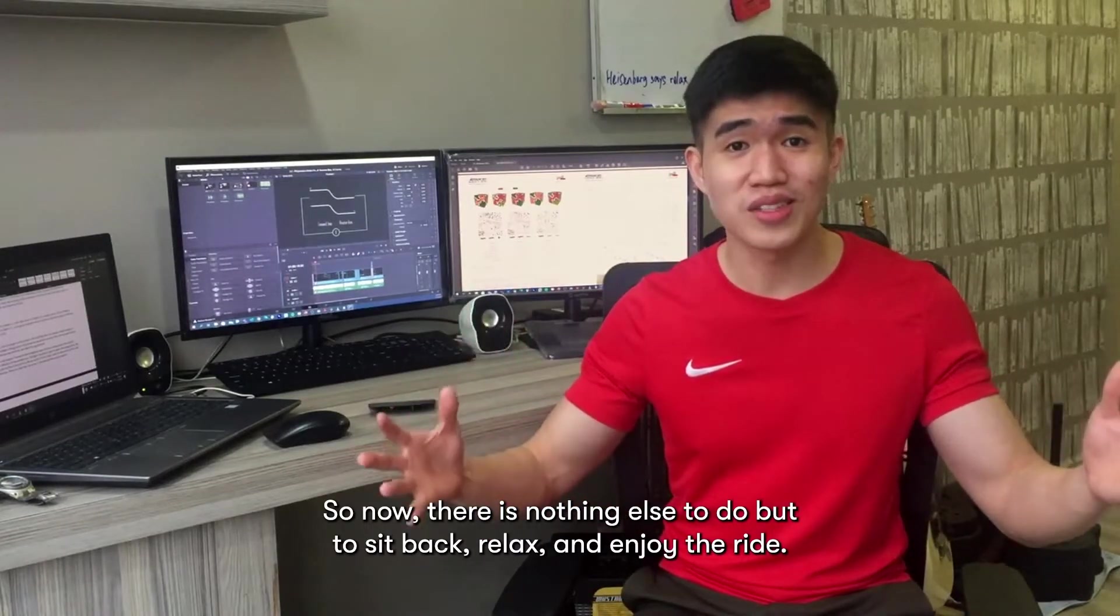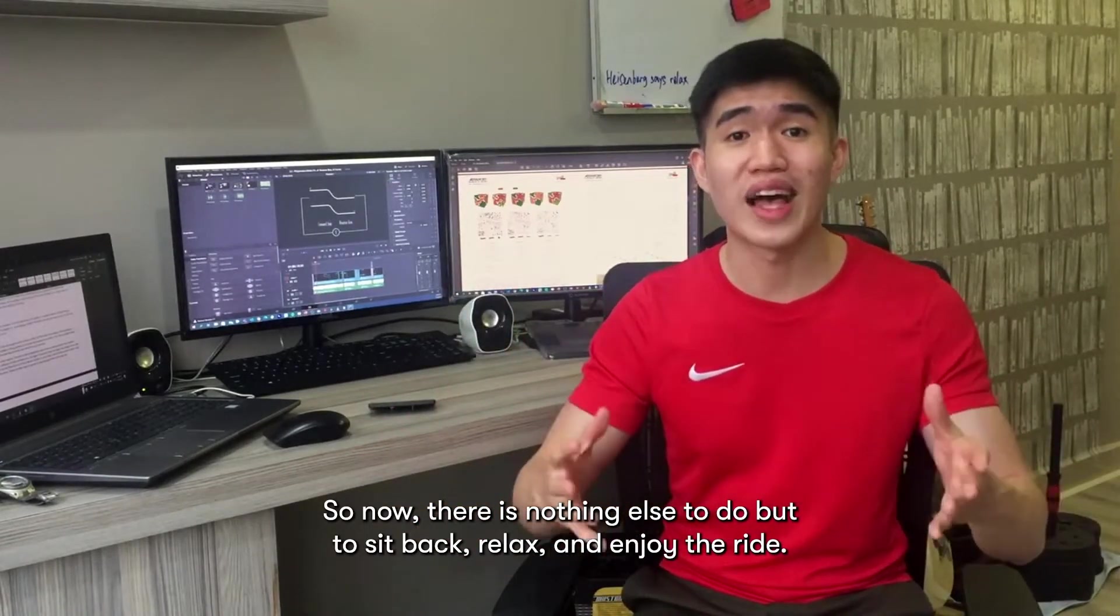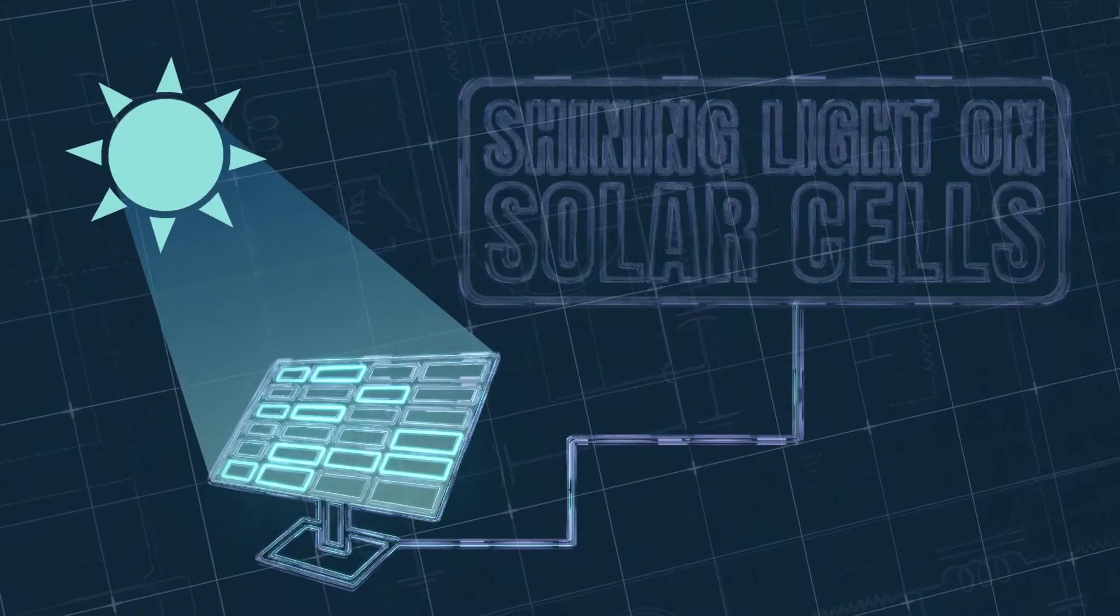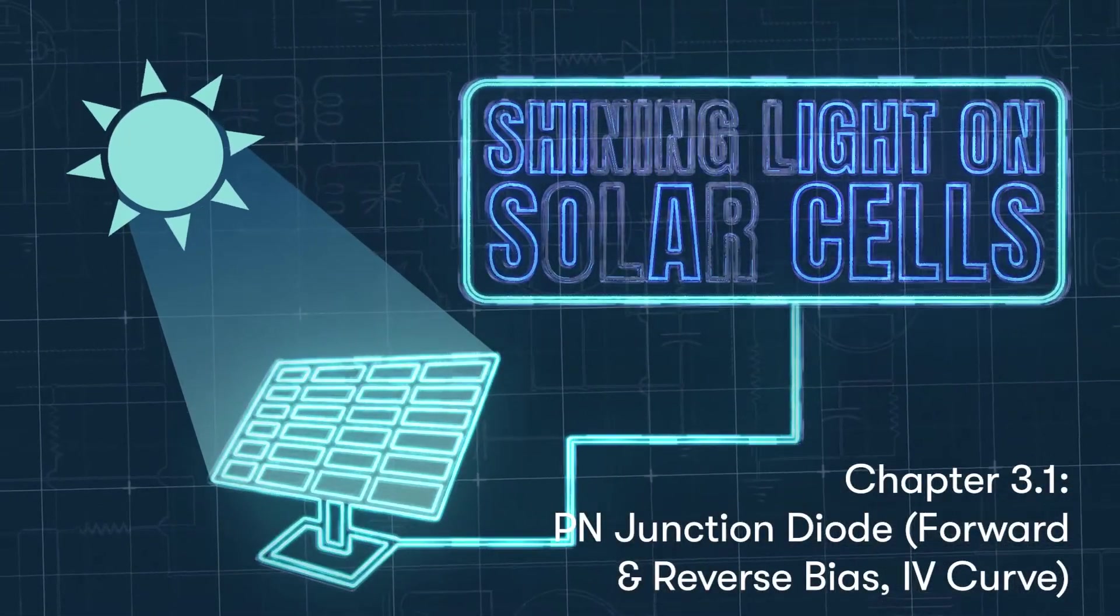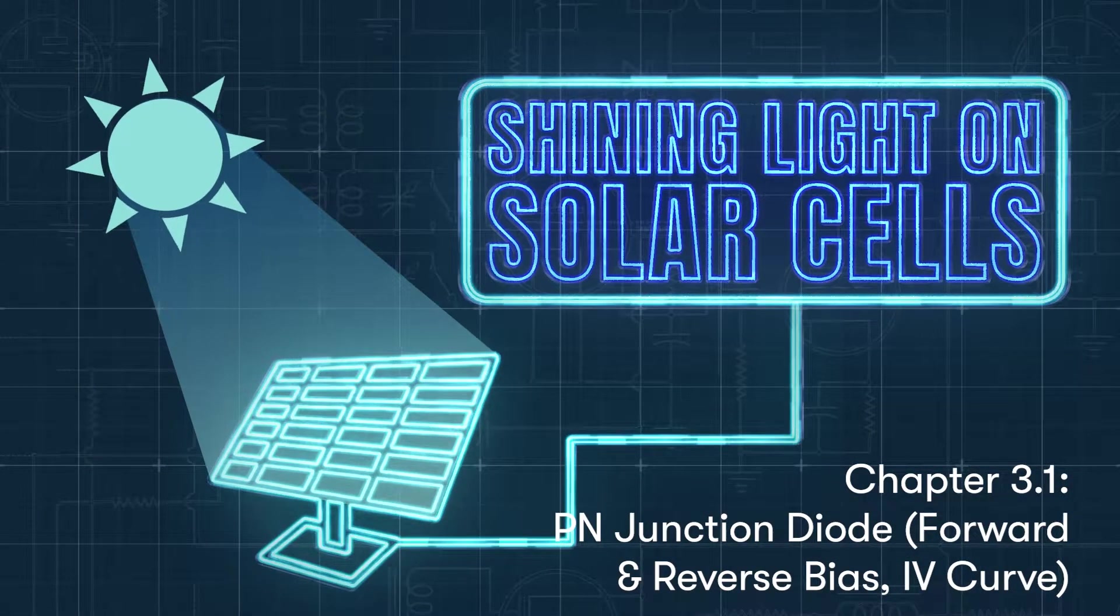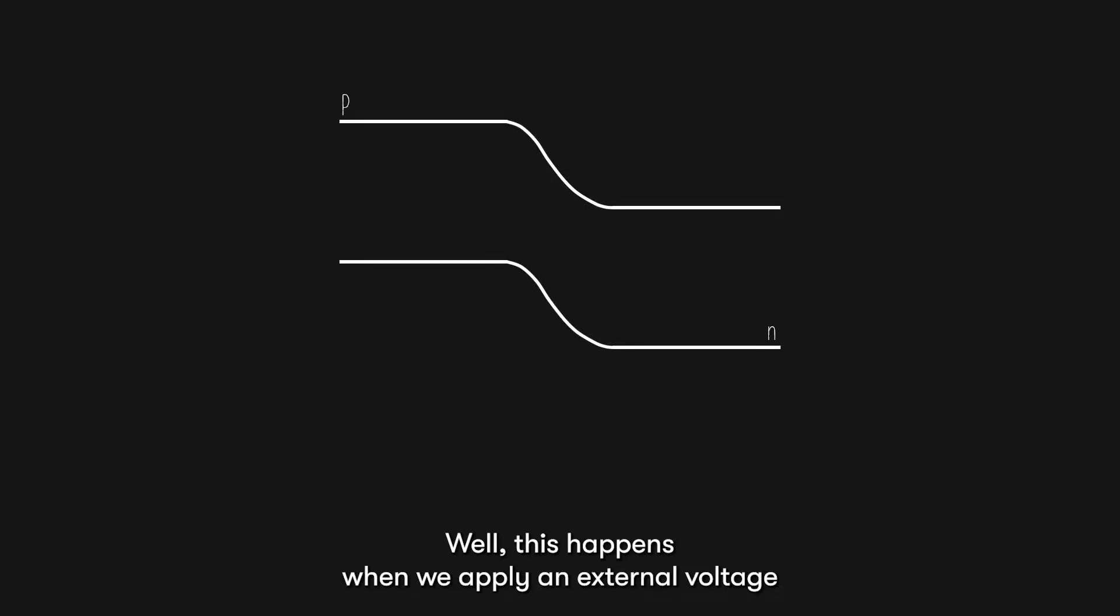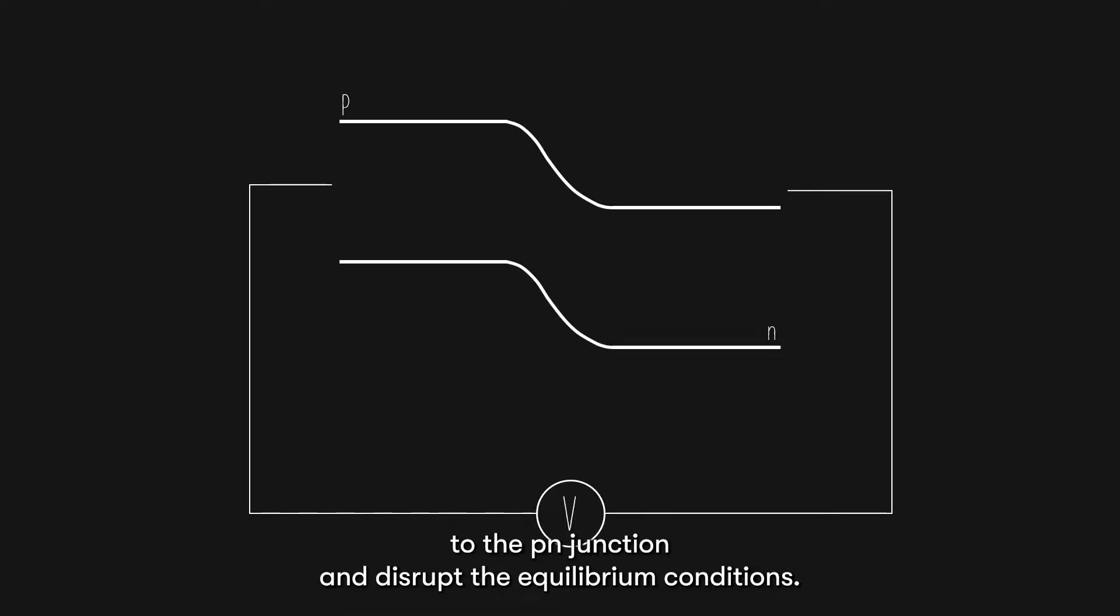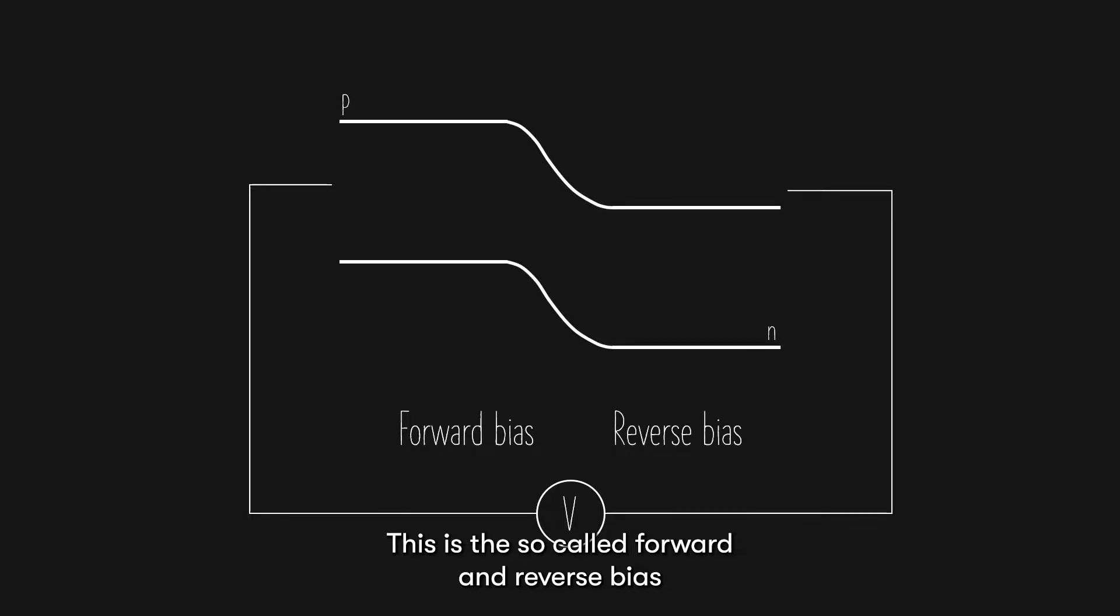So now, there's nothing else to do but to sit back, relax, and enjoy the ride. So, exactly how can we get current to flow in a PN junction? Well, this happens when we apply an external voltage to the PN junction and disrupt the equilibrium conditions. This is the so-called forward and reverse bias that we commonly hear about PN junctions.